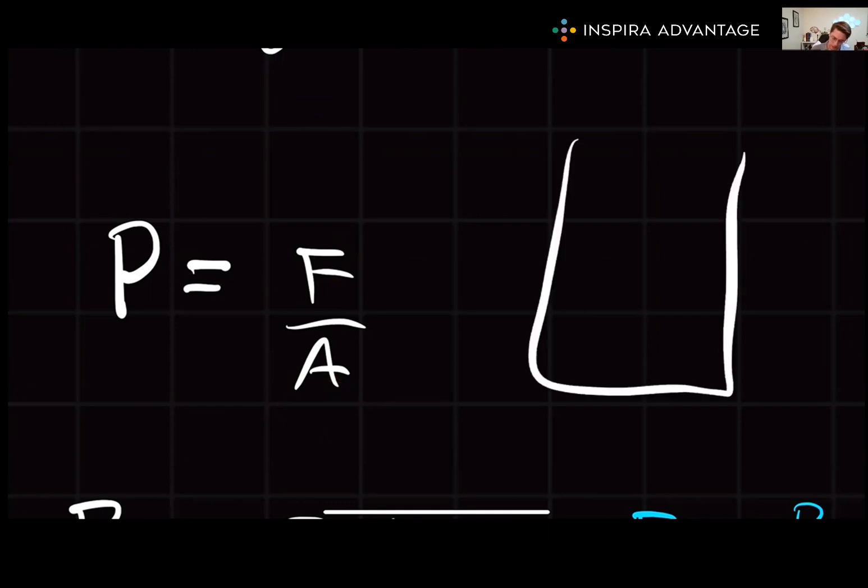What this looks like is if we have the container here, we are always going to exert a force perpendicularly or at a 90 degree angle here. The formula for pressure is P equals force over area.